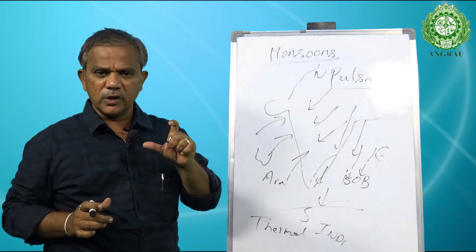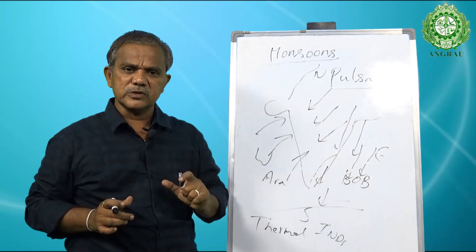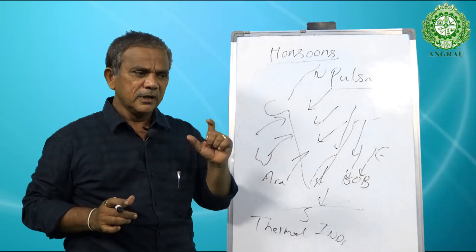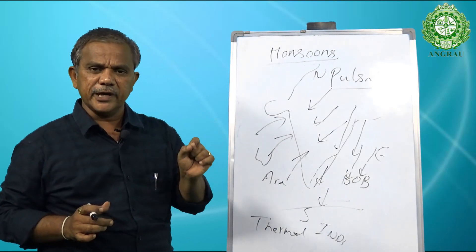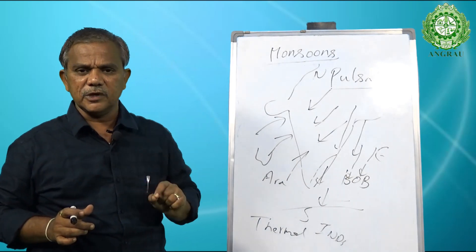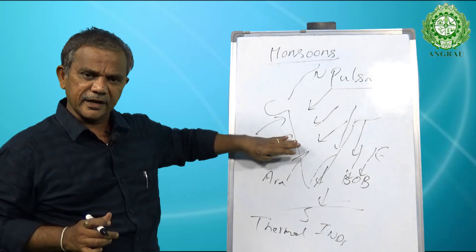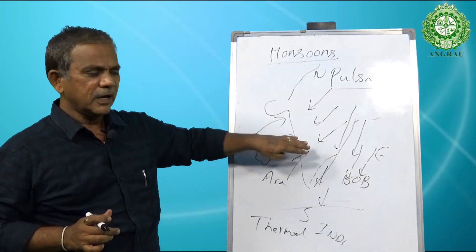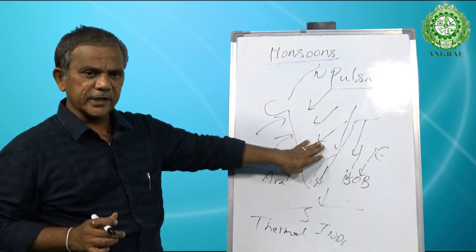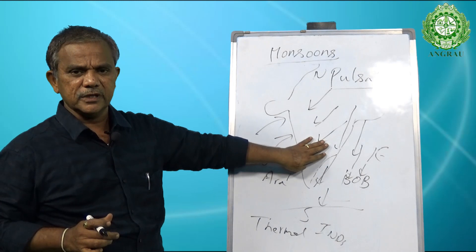We are most concerned about the quality of monsoons. The onset of the monsoon is very important — it is the time period when the monsoons begin. The monsoon first touches the Kerala coast around May 25th, and in Andhra Pradesh it is expected around June 7th.